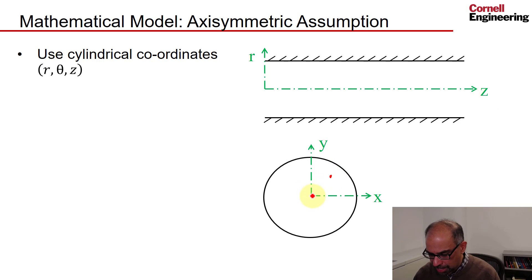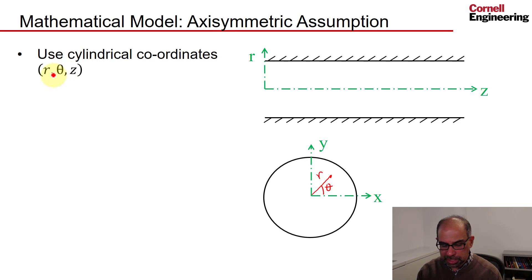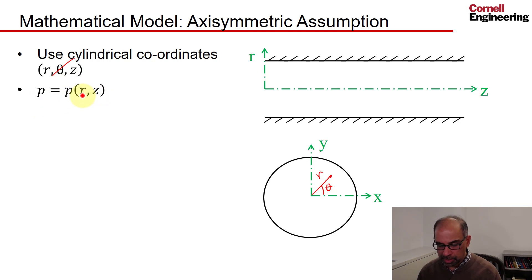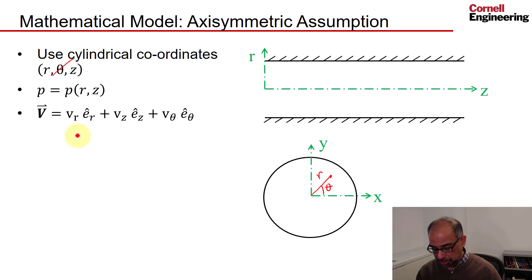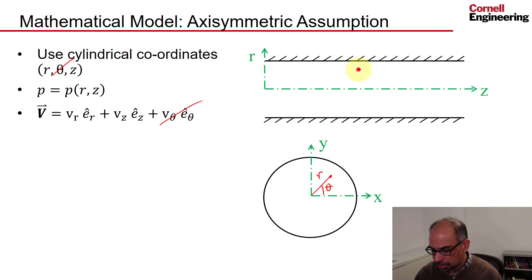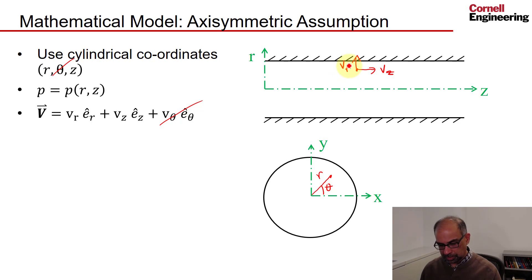Instead of solving in x, y, z coordinates, we use cylindrical coordinates r, theta, z. If I have a point, that distance is r and that angle is theta. None of the variables depend on theta — the circumferential coordinate — so for instance pressure depends only on r and z. For velocity, we decompose it into the radial component, the axial component, and the theta component, which we assume is zero.